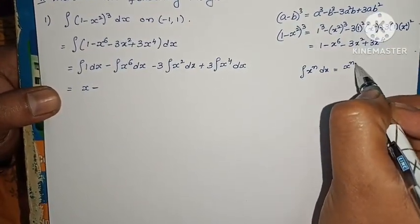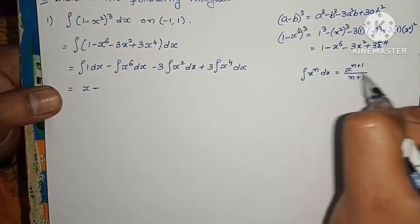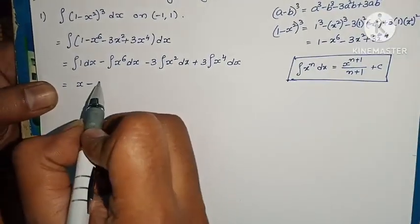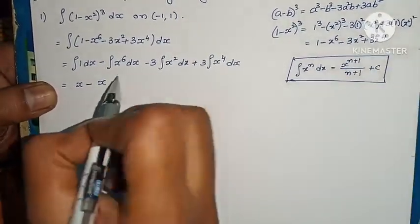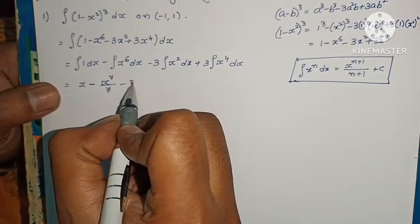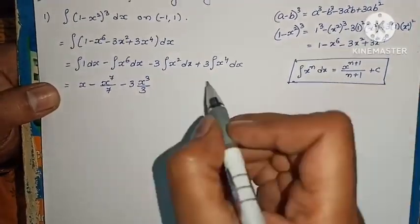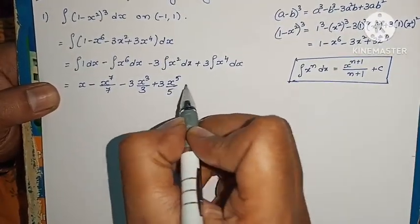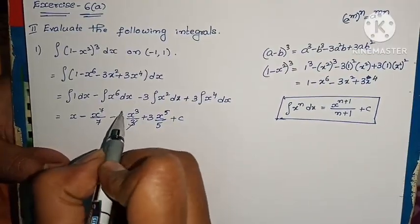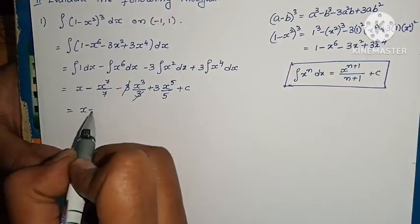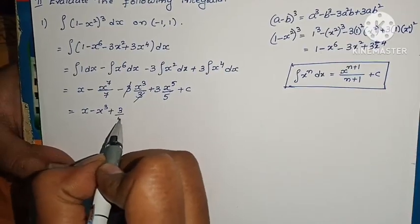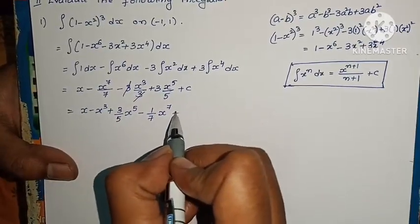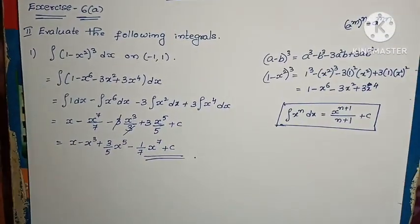The formula is: integral x power n dx equals x power n plus 1 by n plus 1 plus c. Applying this formula: integral 1 dx gives x, minus x power 7 by 7, minus 3 into x cube by 3. Plus 3 into x power 5 by 5 plus c. The 3s cancel, giving x minus x cube plus 3 by 5 times x power 5 minus 1 by 7 times x power 7 plus c.